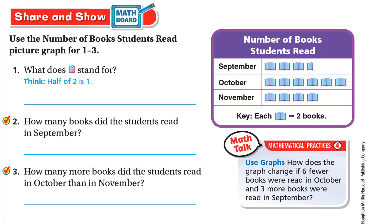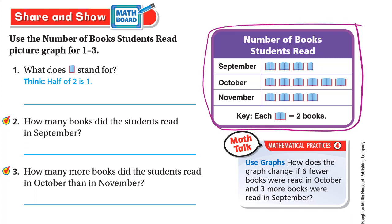Now for share and show. Use the picture graph showing the number of books students read for questions 1, 2, and 3. Always look at the key — each book or symbol means 2 books. Question 1: what does half of a book stand for? The full book symbol means 2 books, so half means only 1 book. Half of 2 is 1, so half of the symbol means 1 book.